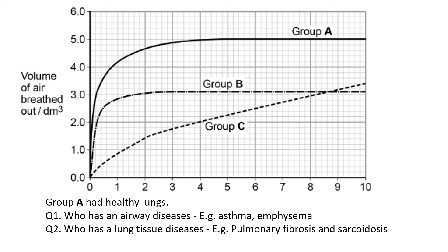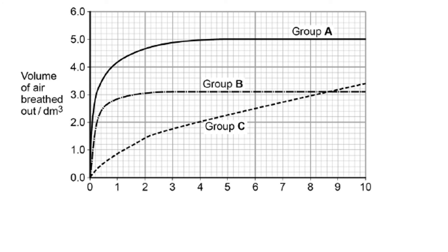Looking at the two lines, group B can breathe in and out at pretty much the same rate as the healthy group A, but very quickly breathes out the maximum amount of gas — meaning there's an issue with the volume of air inside the lungs. Group C, however, breathes the gas out at a much slower rate — the rate at which gas is escaping the lungs is much slower, hence the gradient of the graph is lower.